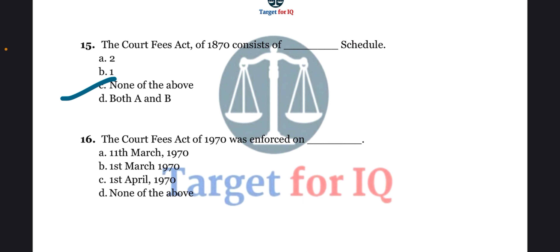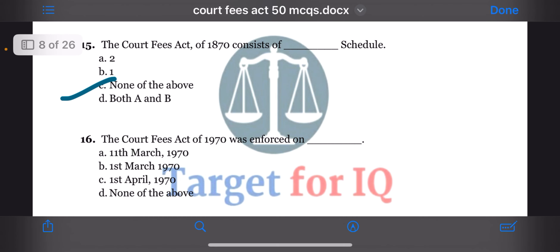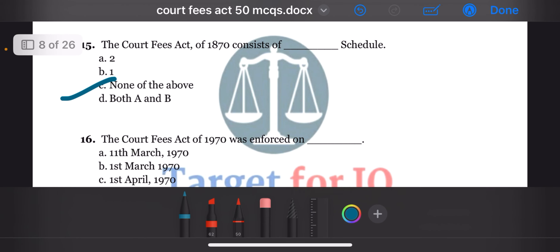Next question: the Court Fees Act of 1870 was enforced on dash. The options are A. 11th March 1870, B. 1st March 1870, C. 1st April 1870, or D. None of the above. The correct answer is option C. 1st April 1870.